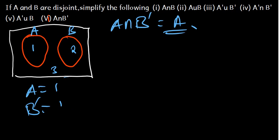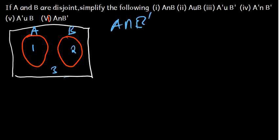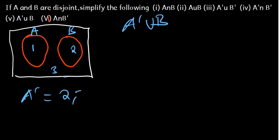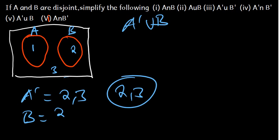Part 5 is A complement union B. A complement is {2, 3} and B is {2}. So A complement union B is going to be {2, 3}, which is the same as A complement. The answer is A complement. That is it for this video.